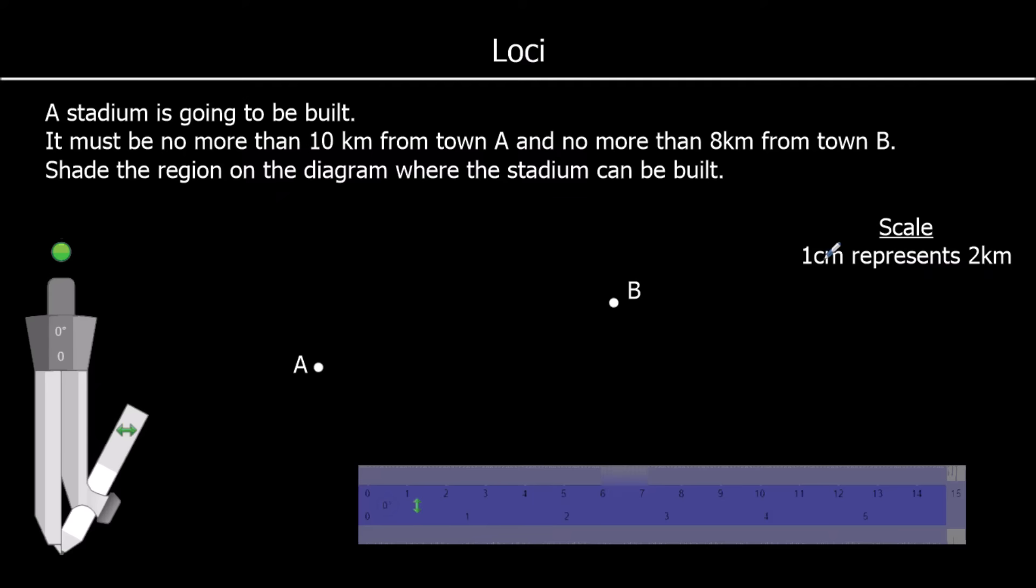So if 1 cm for every 2 km, 10 km divided by 2 will be 5 cm. And 8 km, half of that is 4 cm.